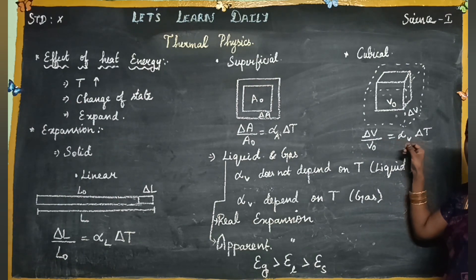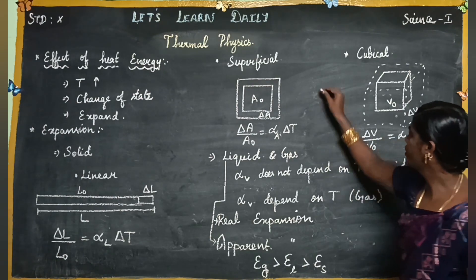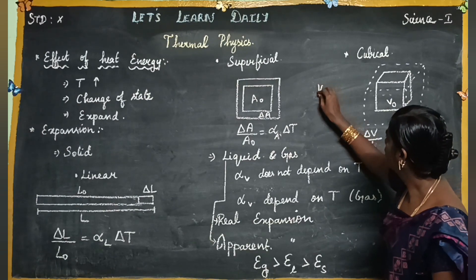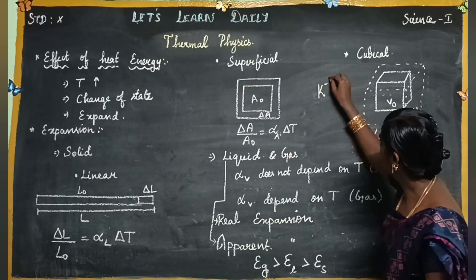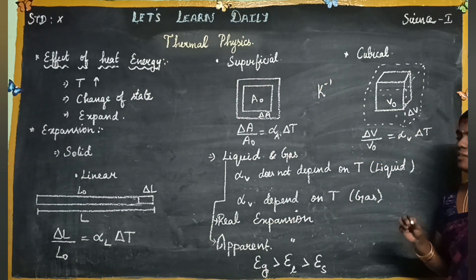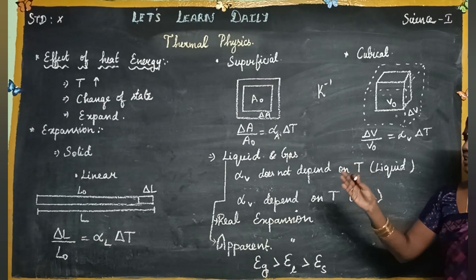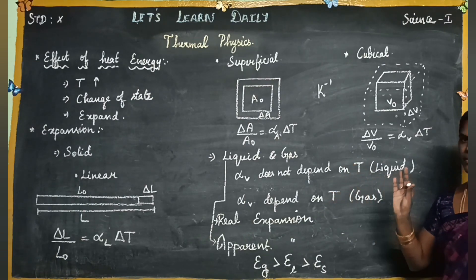That is the coefficient of cubical expansion. The unit is Kelvin inverse. So we have three coefficients: coefficient of cubical expansion, superficial expansion, and linear expansion.